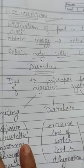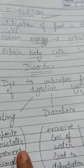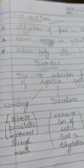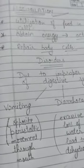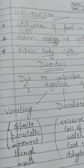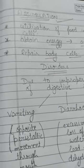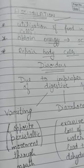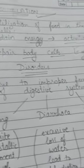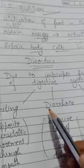Now let's come to the disorders. Although our digestive system helps to produce energy for many activities, if our digestive system is not working properly and its functioning is impaired, we have to face some problems and diseases. Basically there are three disorders.